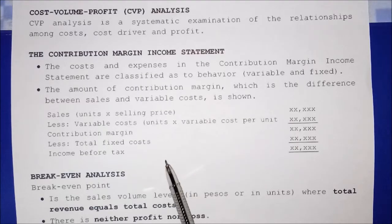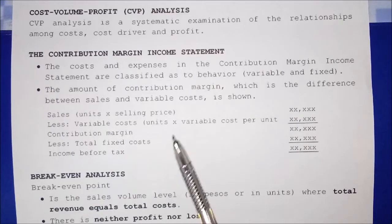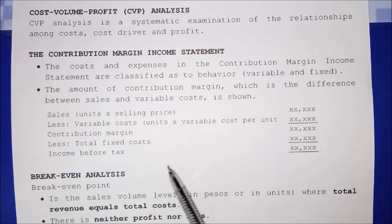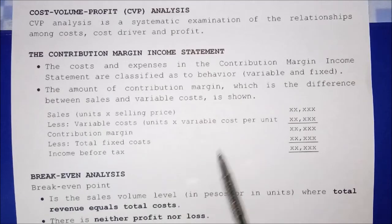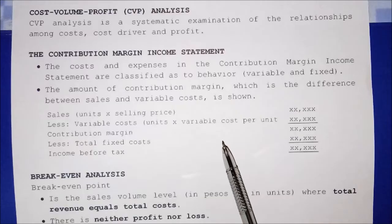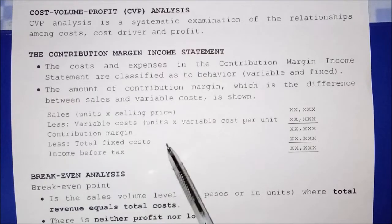Fixed costs are costs that remain constant in total regardless of changes in the level of activity. Examples include depreciation, taxes on real estate, and insurance. Whether you produce 1,000 units, 10,000 units, or nothing at all, the fixed cost is still incurred.